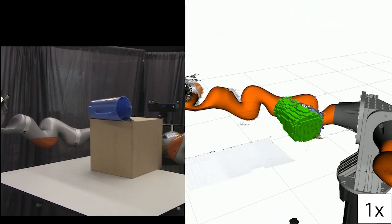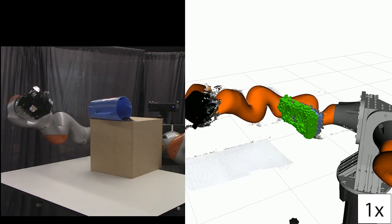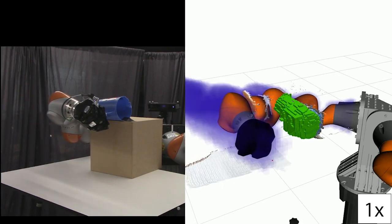Applying CLASP to the YCB pitcher, we again find the initial completions capture the rough occupancy but not the fine details. A network trained specifically to reconstruct the pitcher could likely do better, but our approach does not require that privileged information.